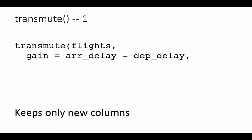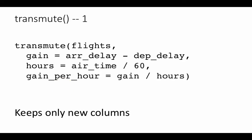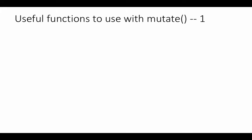For example: transmute(flights, gain = arrival_delay minus departure_delay, hours = arrival_time divided by 60, gain_per_hour). The result of this operation will be a table that has only these 3 columns. So transmute is useful when you are interested in keeping only what you just created.